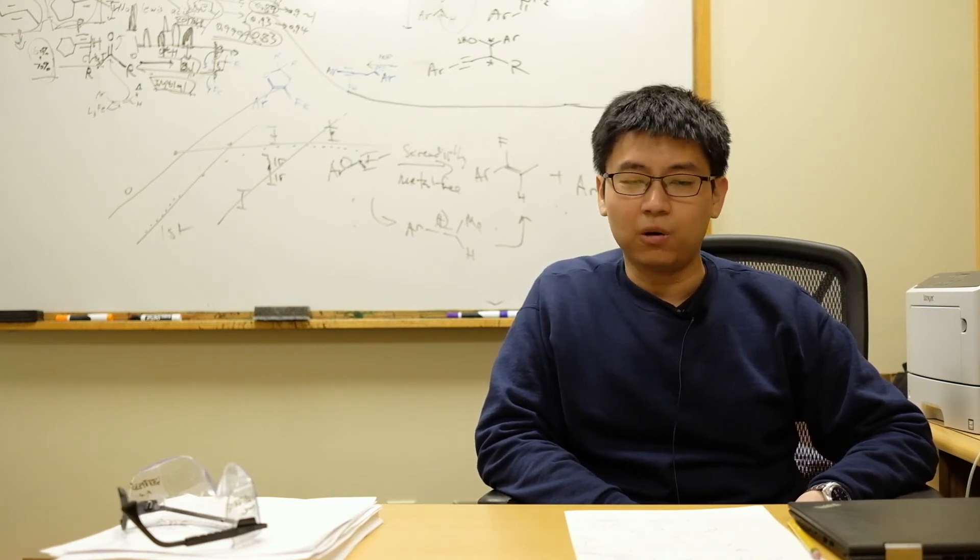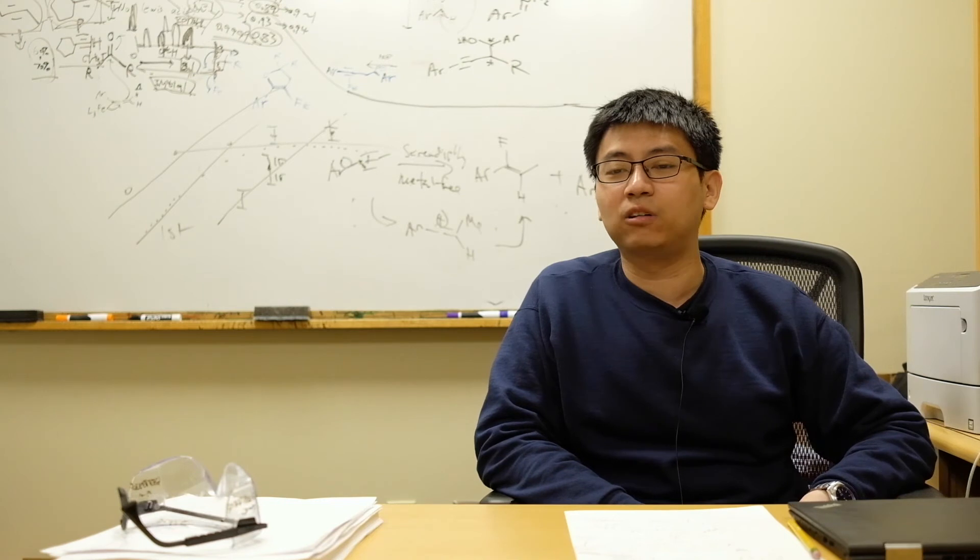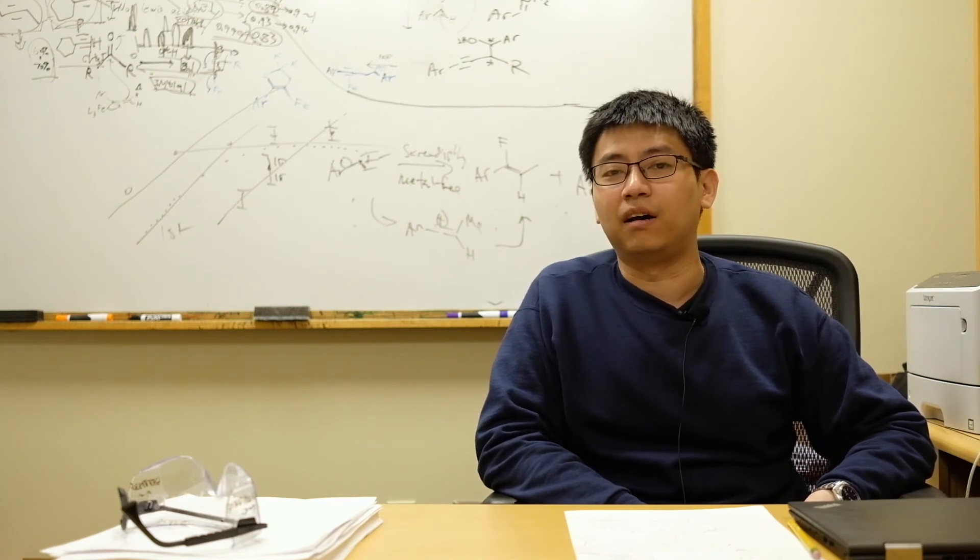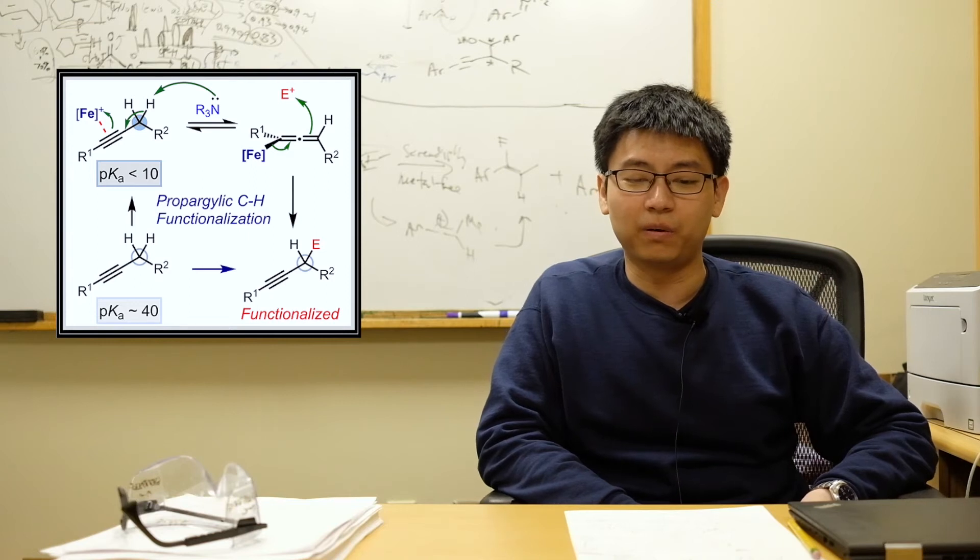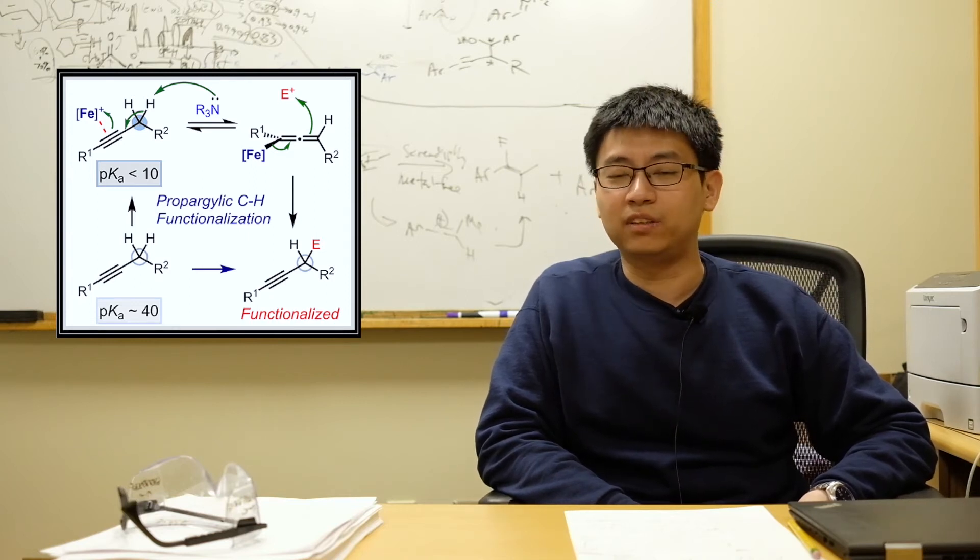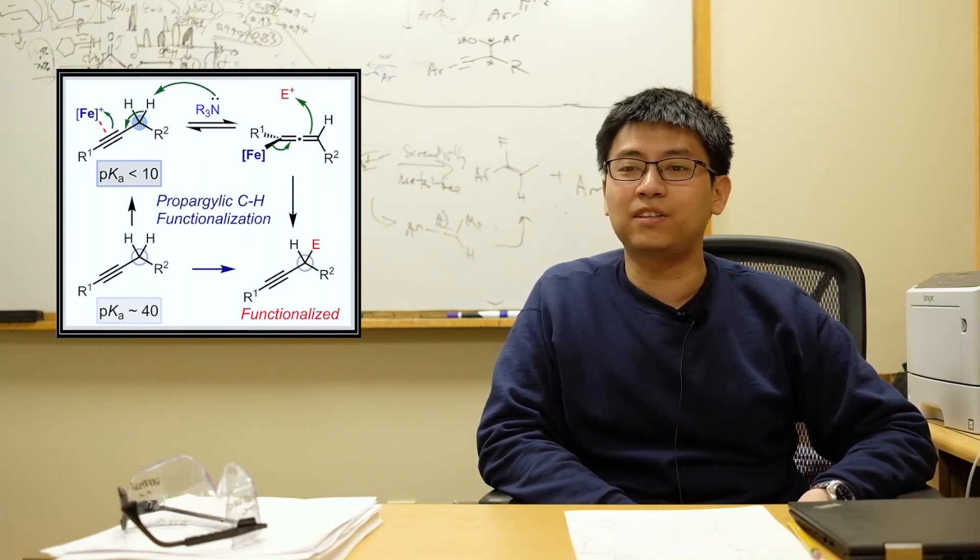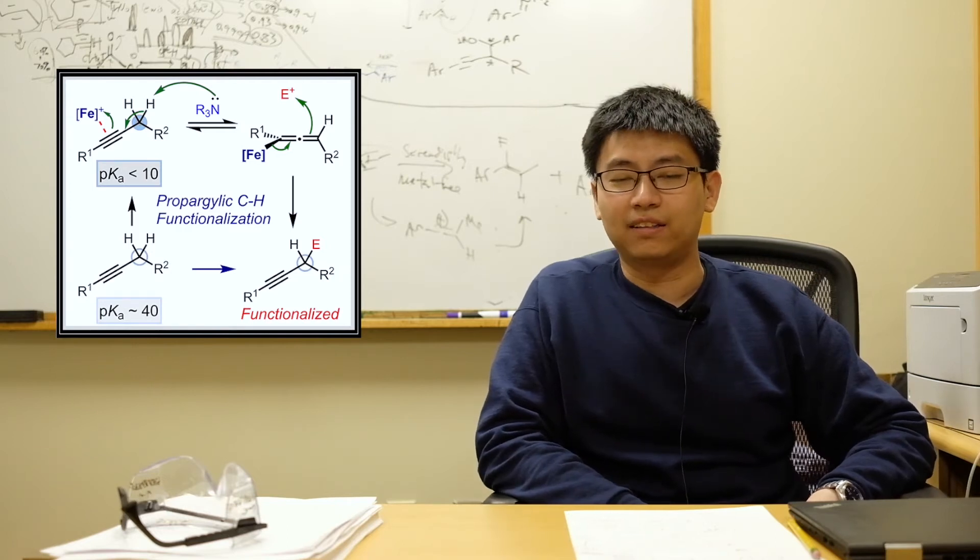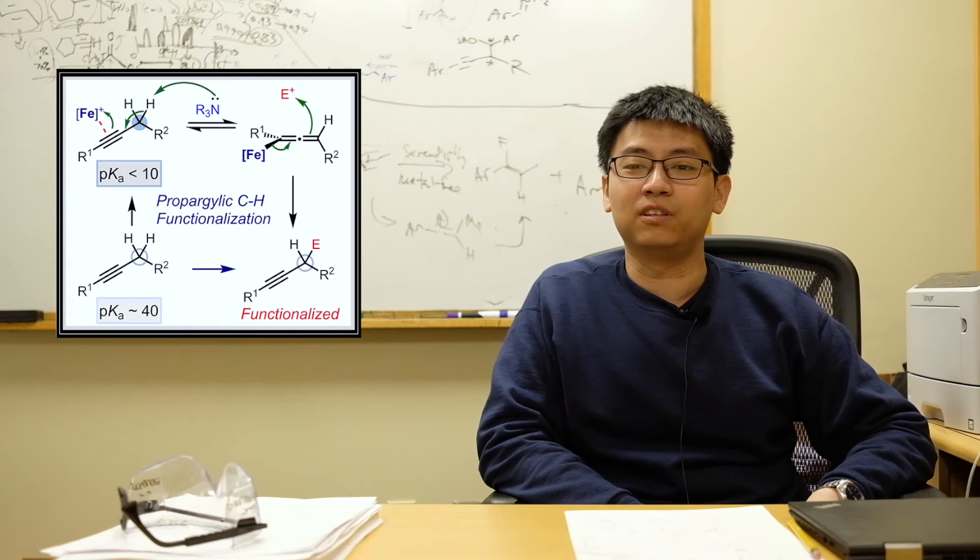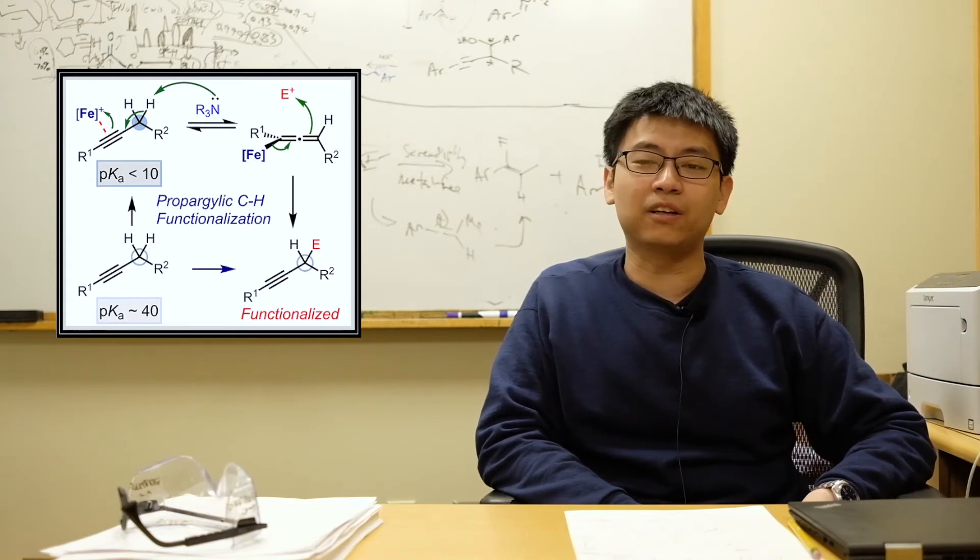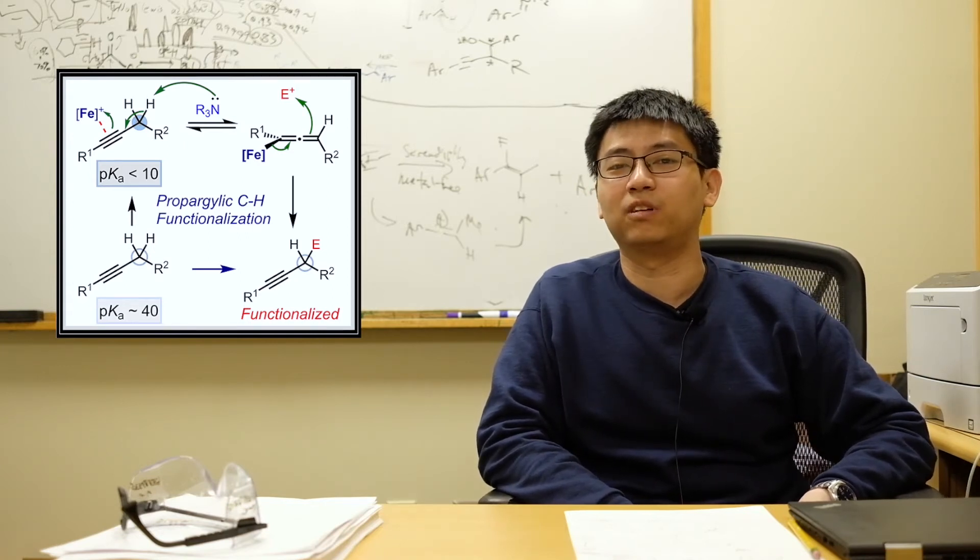In this first area, we're interested in the allylic and propargylic functionalization of alkenes and alkynes. In this new approach that we're developing, we're using deprotonation as a strategy for CH functionalization, and this is achieved by first coordination of a metal to the alkene or the alkyne to increase the acidity of the allylic or propargylic position.